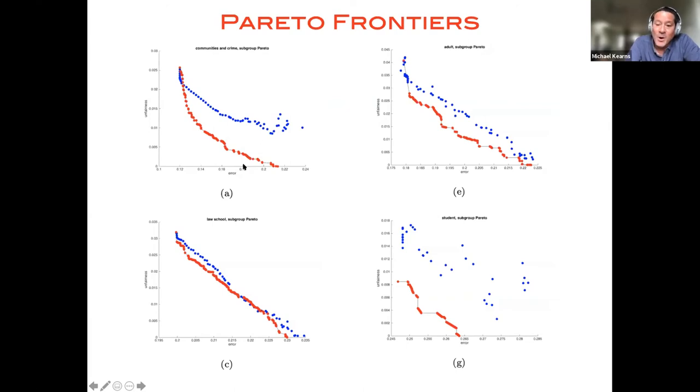And in general, what you want are curves that kind of look like this. In other words, they have a fair amount of convexity to them, because when you have a highly convex curve, it means that, for instance, compared to this model, for only a slight increase in the error, you can actually reduce the unfairness a considerable amount. Okay, and this is in general what you want.